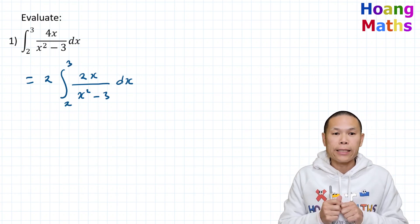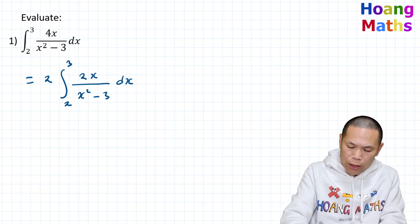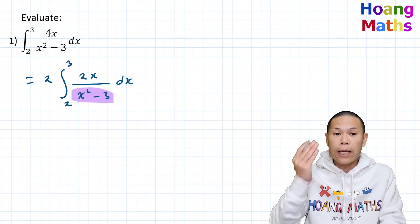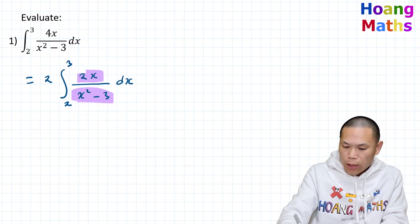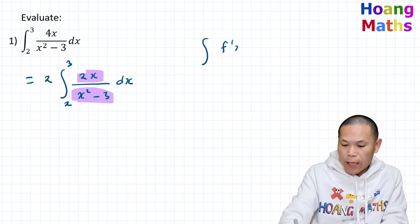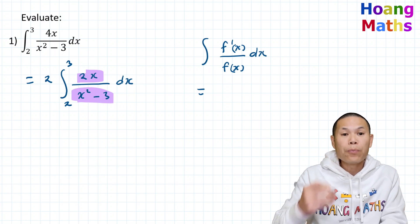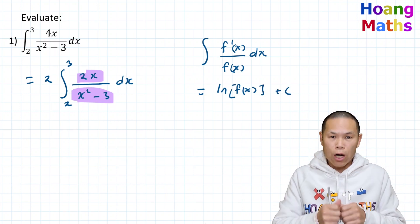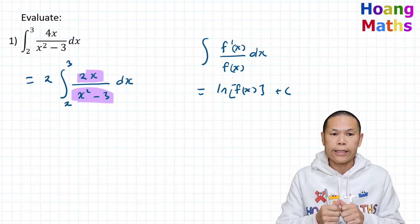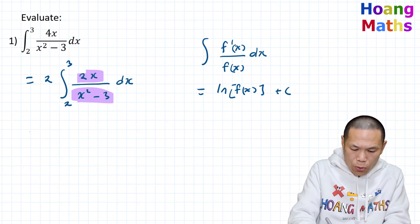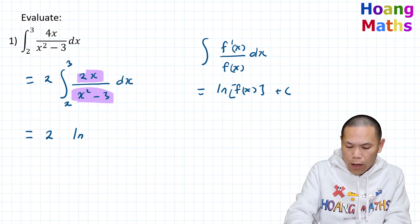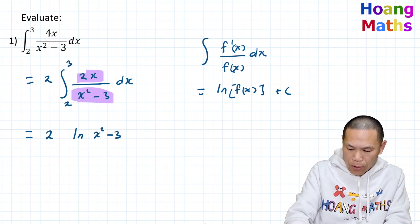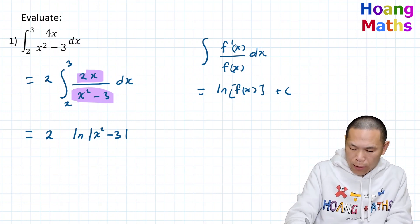So this is exactly the same. Now we can see that if I differentiate the bottom, the denominator, it gives me the numerator. In other words, if we integrate f'(x) over f(x) with respect to x, that will give us ln|f(x)|. And we add a constant of course. But in this case we are working on definite integration, so we do not need to add c. So that is equal to 2 ln|x squared minus 3|.